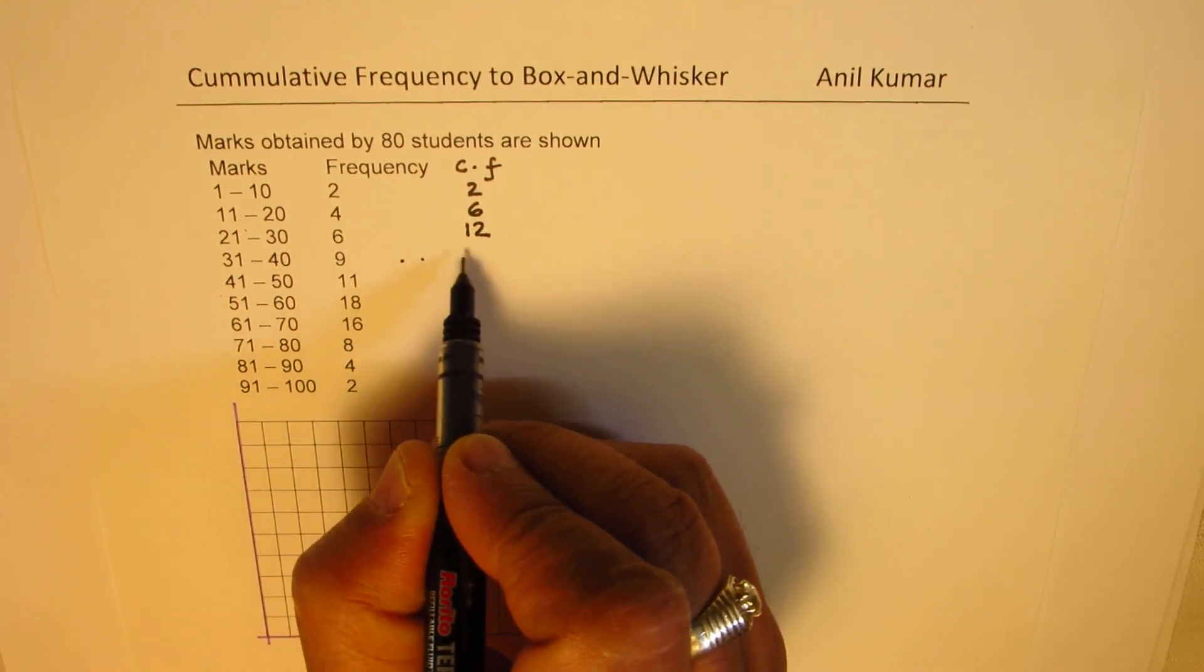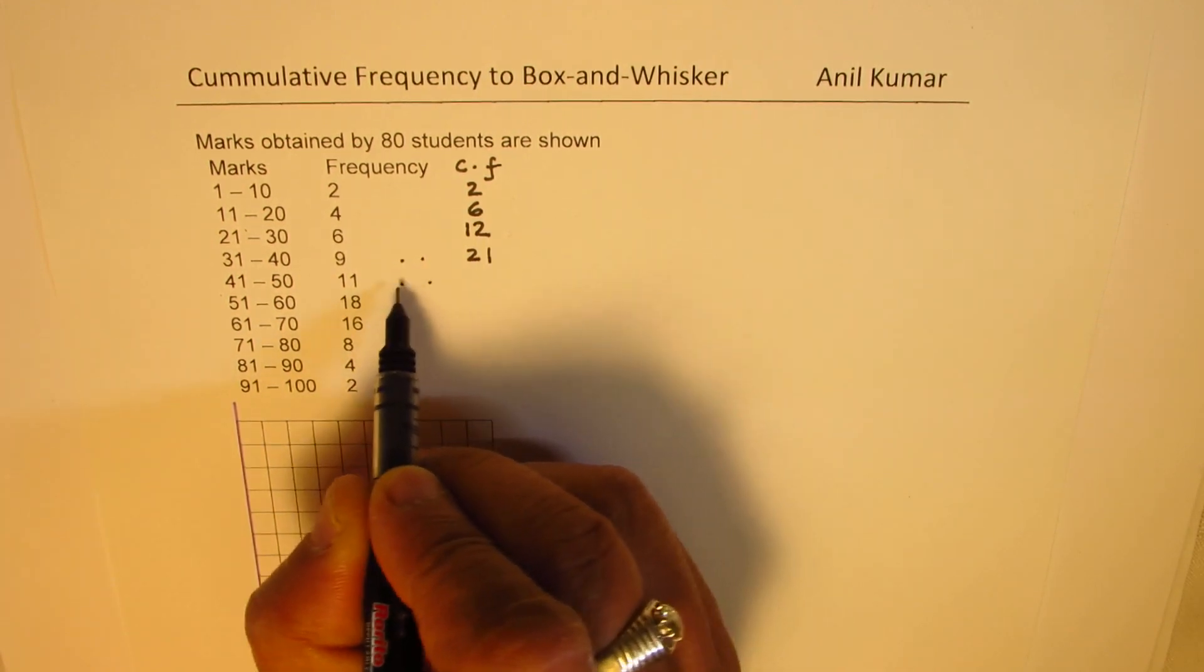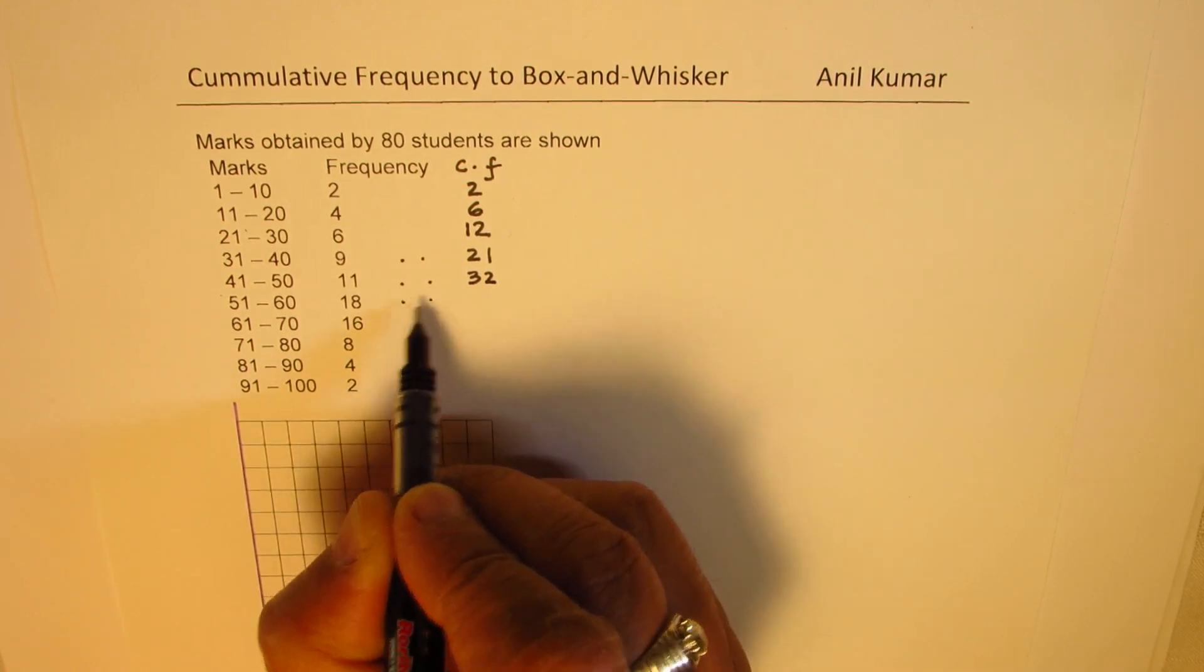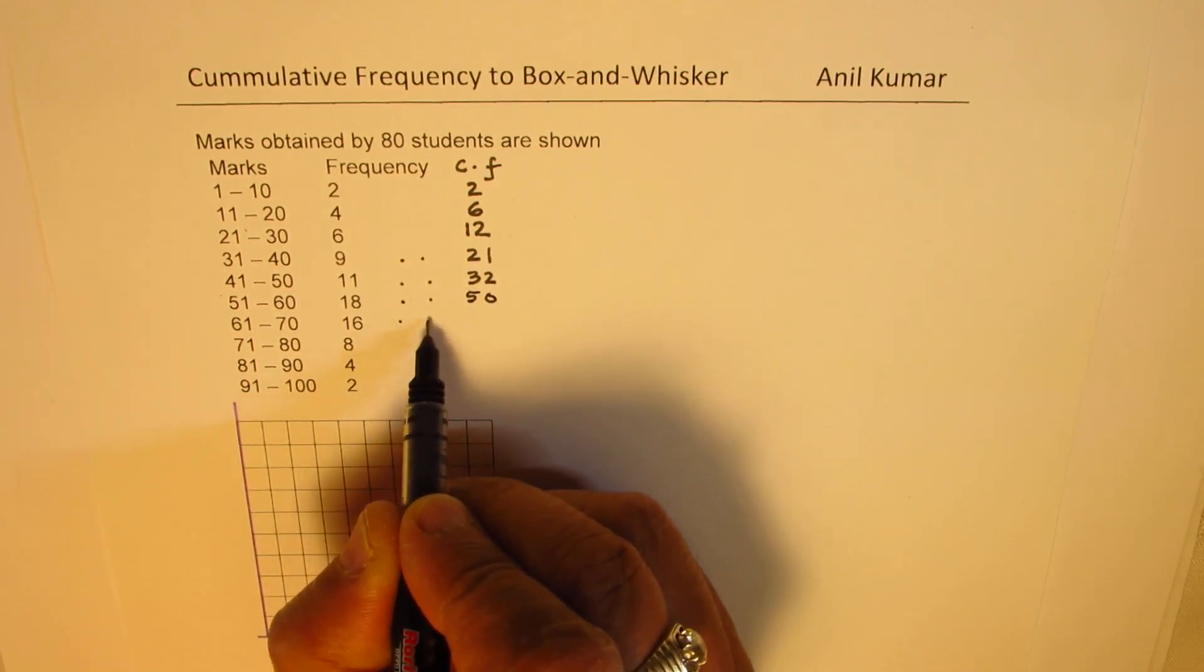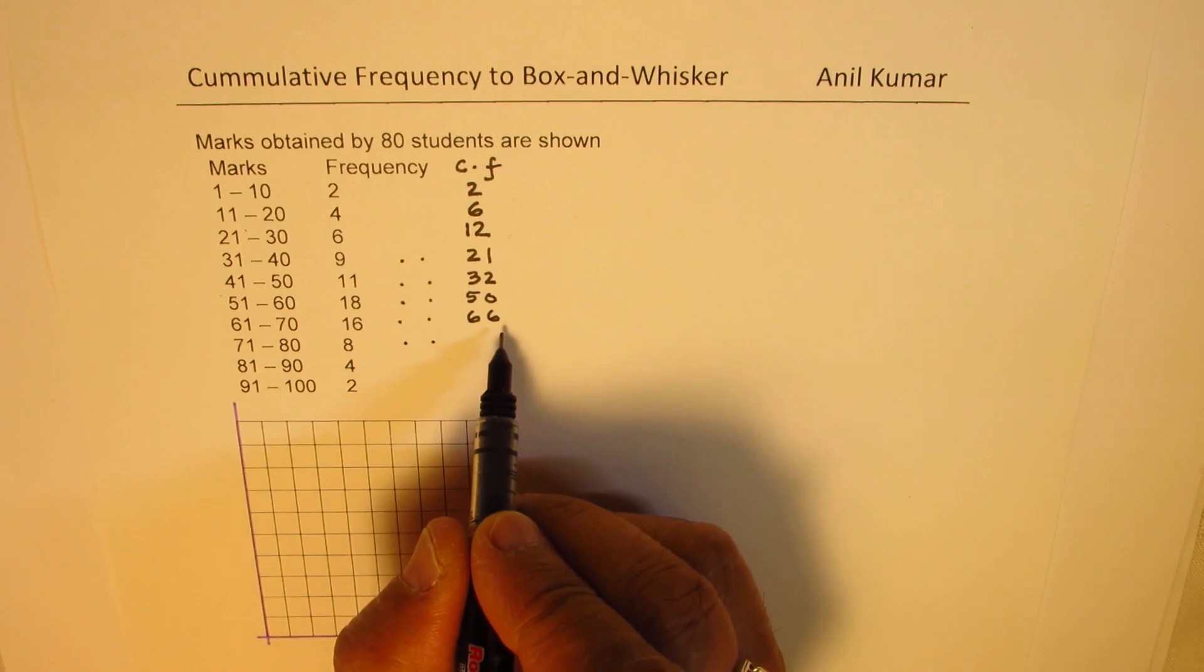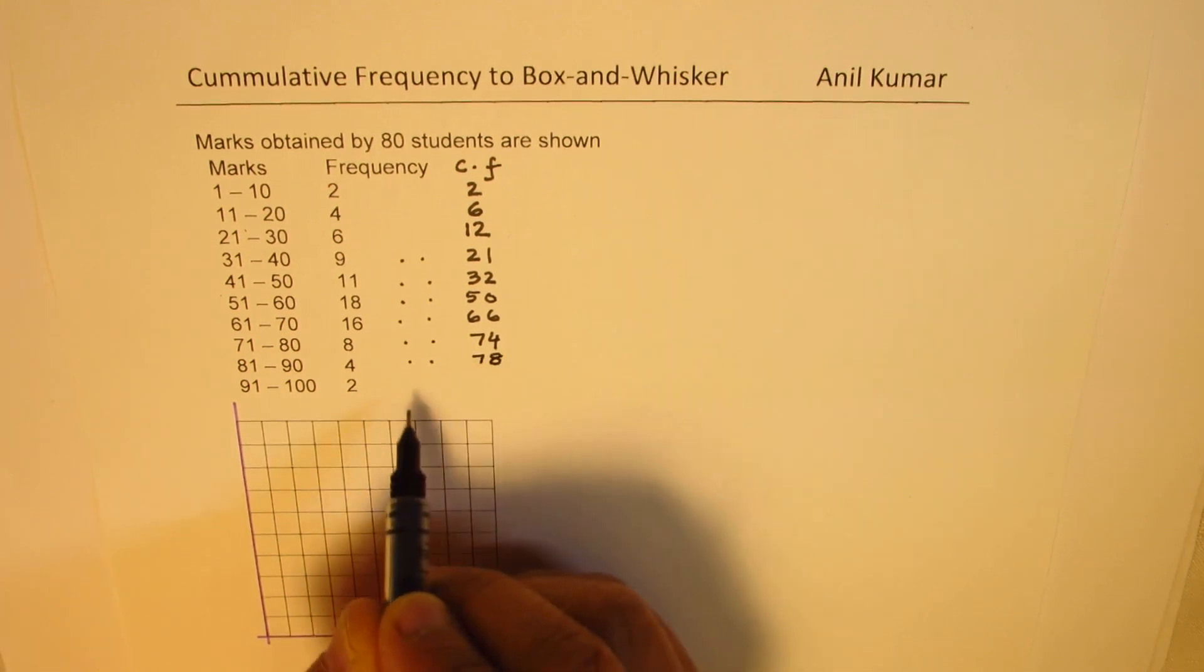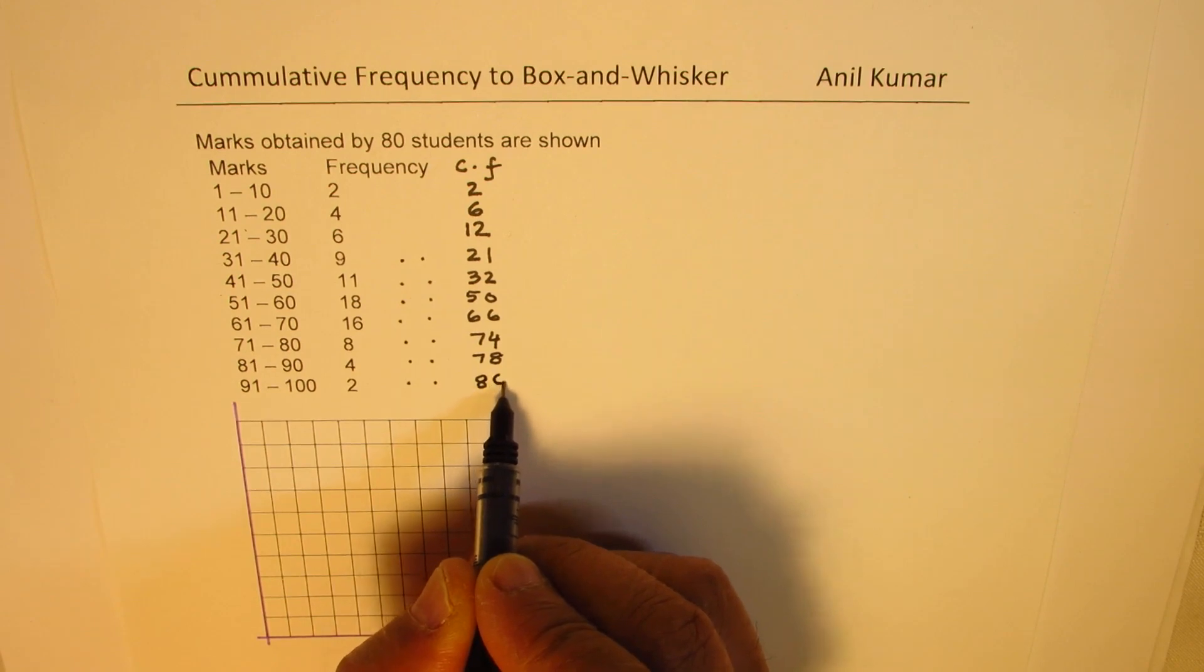And for 9, it'll be 12 plus 9, which is 21. And for 11, we'll add 11 to 21. So, we get 32. And now, we're going to add 18 to 32. So, we get 50. And then, we add 16 to 50. So, we get 66. And then, we add 8 to 66, we get 74. And then, 4 to 74 will give us 78. And then, adding 2 to 78, we get cumulative frequency of 80.